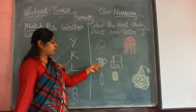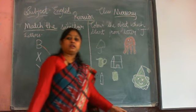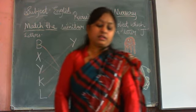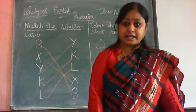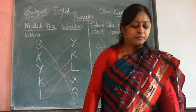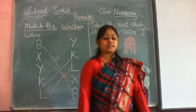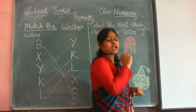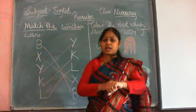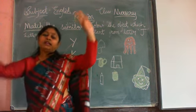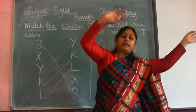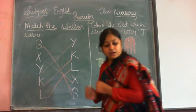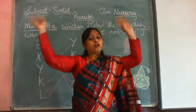J for jellyfish, J for jar, J for joker — you have to color the pictures which start from letter J. Now let us revise the rhyme. Hickory dickory dock, the mouse ran up the clock, the clock struck one, the mouse ran down, hickory dickory dock.